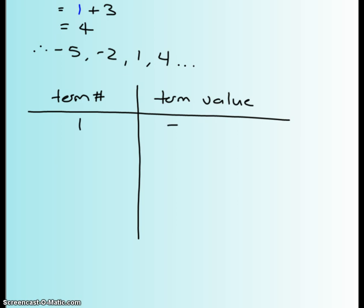So the first term is negative 5, second term was negative 2, and then third term is 1, and then the fourth term was 4. And to find out the pattern, I'm just going to see what my first differences are,